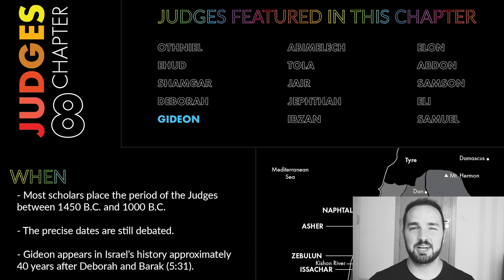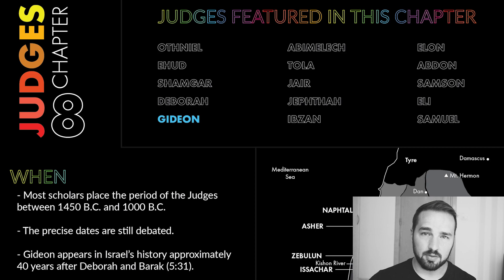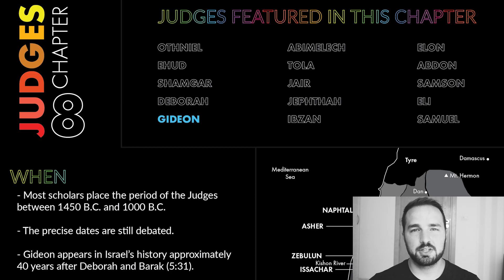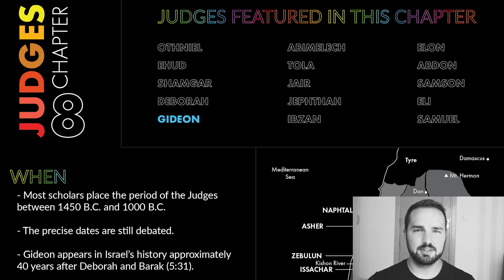Let's talk about Judges chapter 8. That is our topic today. Our judge that we're going to talk about is Gideon. We've been talking about him for a couple chapters now. There are some judges that get one verse, like Shamgar, and then there are judges that get several chapters of information and record of their life, and Gideon is one of those. Definitely a key character in the book.